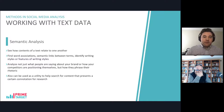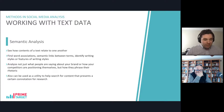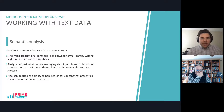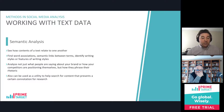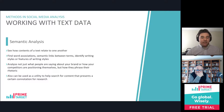The third and final method that we'll talk about today is called semantic analysis. It's a little similar to topic modeling, but it has some important differences. Semantic analysis is when we see how the contents of a text relate to one another — we find word associations and semantic links between terms, which could identify writing styles or features of writing styles. It helps us not just analyze what people are saying about your brand or how your competitors are positioning themselves, but also how they phrase their rhetoric. It can also be used as a utility to help search for content that presents a certain connotation for research.